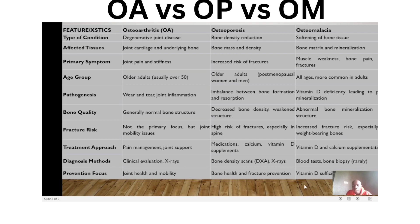Those are the 10 differences between osteoarthritis, osteoporosis, and osteomalacia. Remember also that osteoarthritis is closely related to rheumatoid arthritis — there will be a link to show you the difference between osteoarthritis and rheumatoid arthritis. Thank you so much.